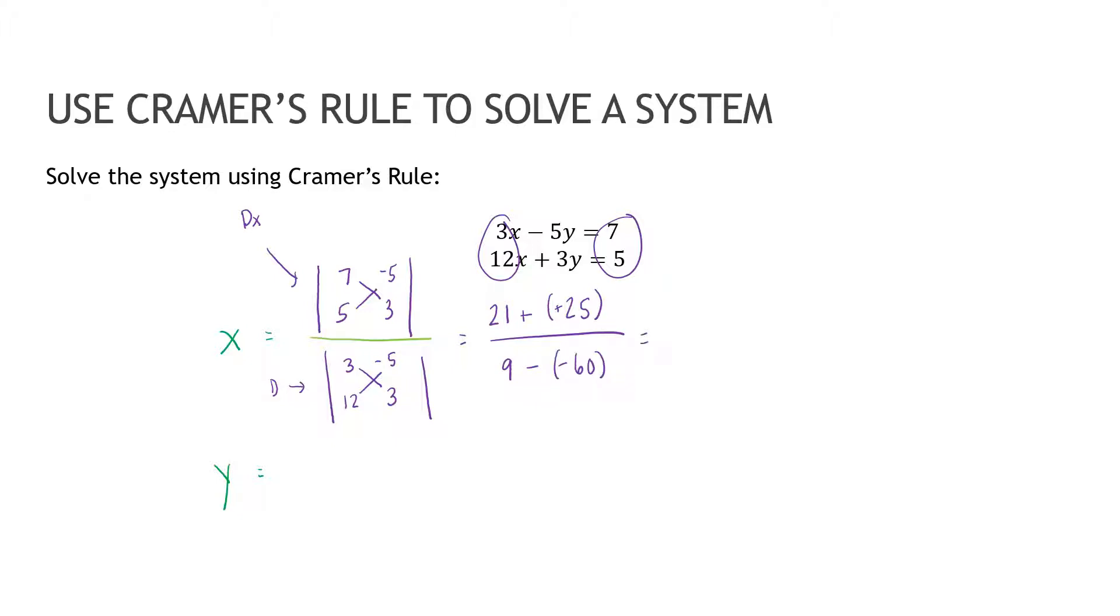So that gives me forty six over sixty nine, which should reduce, hopefully. I think I can take a twenty three out of both. So that's two thirds. So my X answer is two thirds.